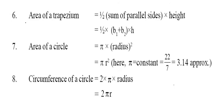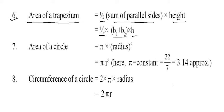Now the area of trapezium — that is 1/2 × sum of the parallel sides × height, meaning the distance between the parallel sides. You can say 1/2 × (B1 + B2) × h. Area of circle is π × r², where π is 22/7 or approximately 3.14. Circumference is 2πr.